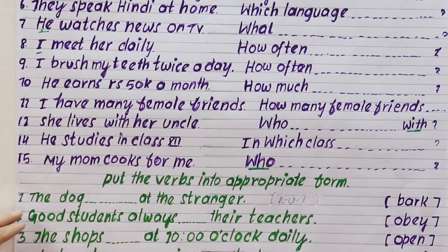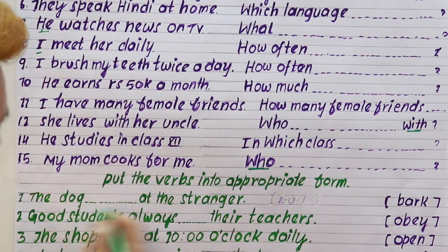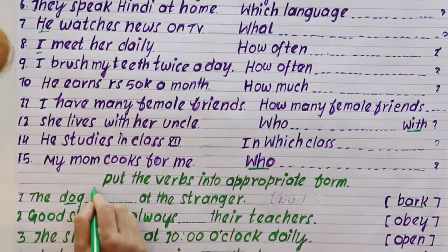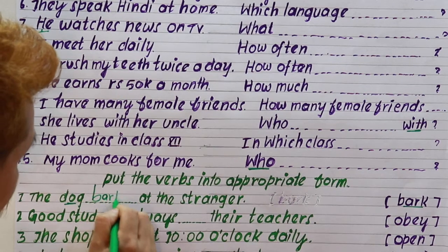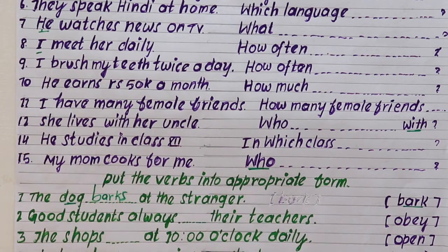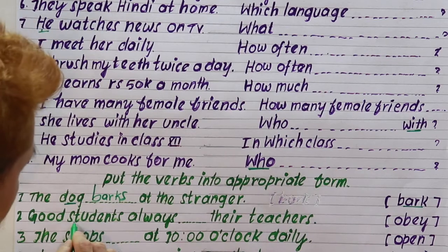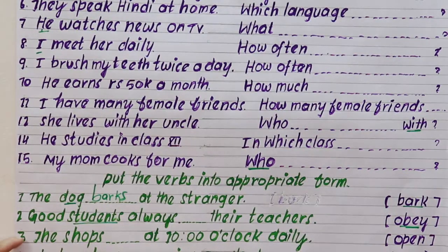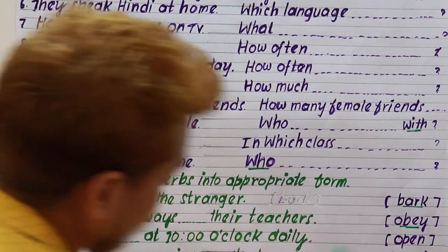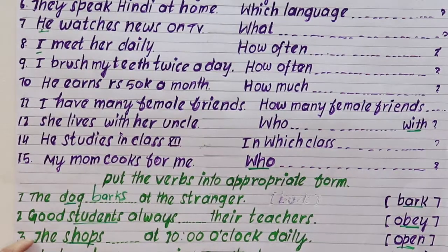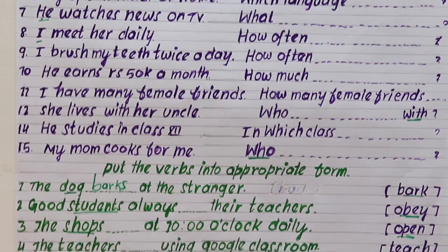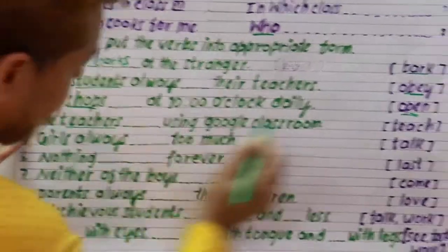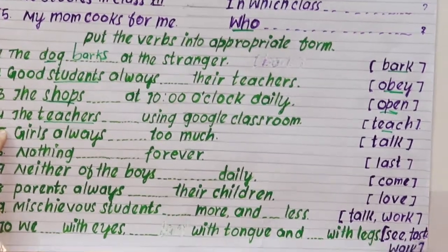The dog barks at the stranger — to talk about time, the dog is singular, so it is barks. Good students always dash their teacher — good students is plural, so the answer is: good students always obey their teachers. The shops open at 10 o'clock daily. The teachers teach using Google Classroom.